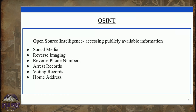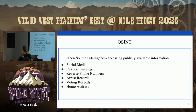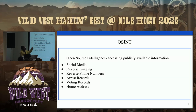Let me talk briefly about open source intelligence. OSINT is simply using publicly available information to find things out, and we've all used it before. In high school, a friend had a crush on a girl and we used OSINT to find out who she was. Some of you have probably used it before going on interviews or looking up a speaker before an event. OSINT resources include social media, reverse image search, reverse phone number lookup, arrest records, voting records, and home addresses. If you look yourself up on Google right now, most of this information will come up.